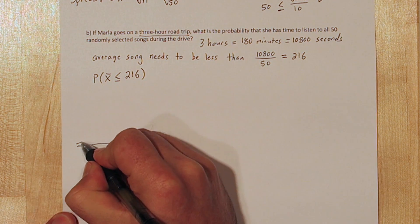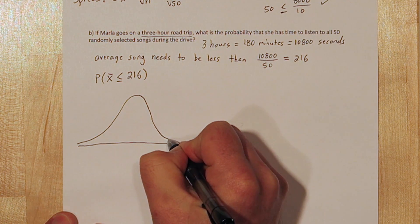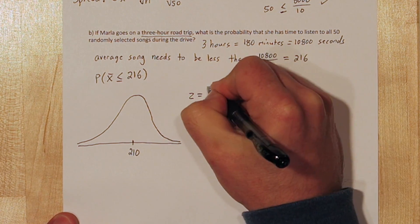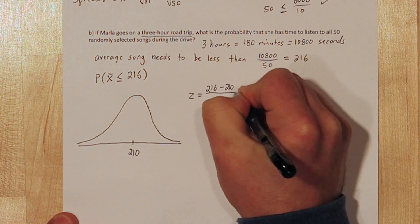We know we can do a normal calculation, so let's sketch a normal curve. The center of our curve is at 210. To figure out where 216 is, let's calculate a Z score.